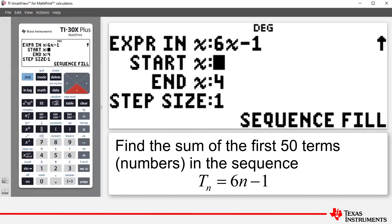Arrow down and we need 50 terms. So our first X value is going to be 1. So we're going to start at 1 and our end X value is going to be 50 because we want 50 terms. And we want X to be 1, 2, 3, 4, 5 all the way up to 50. So our step size is 1.